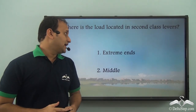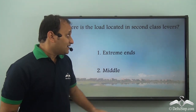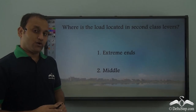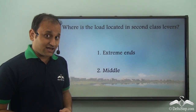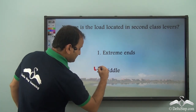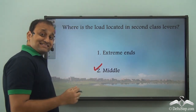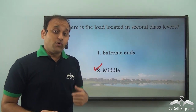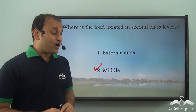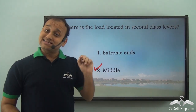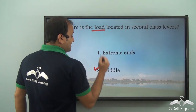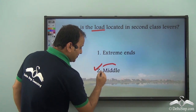So where is the load located in second class levers? In second class levers, the load is located in the middle — that is, load is in the middle while fulcrum and effort are on either side. That is why this is called a second class lever.